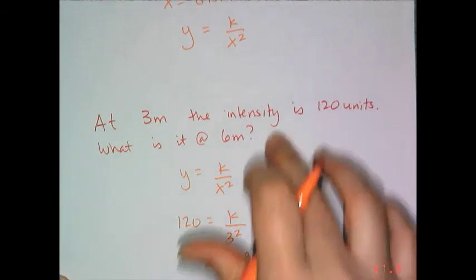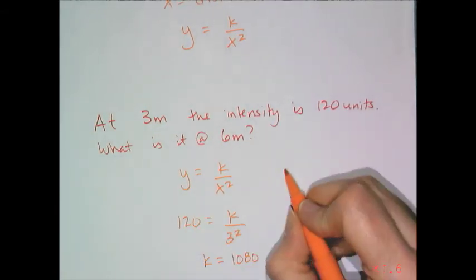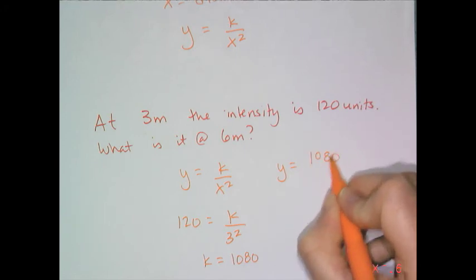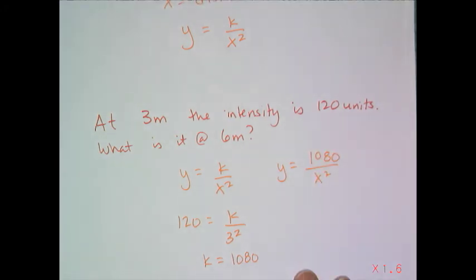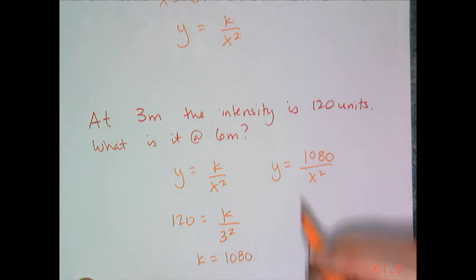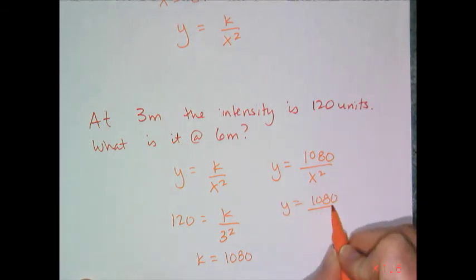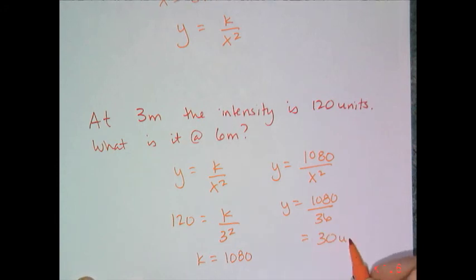If I want to figure out what it is at six meters, then I use my particular equation for this particular bulb and I get y equals 1080 over x squared. Then I can plug in my six, I get y equals 1080 over 36, which is 30 units.